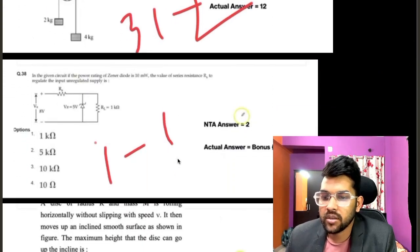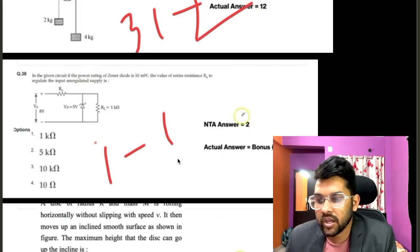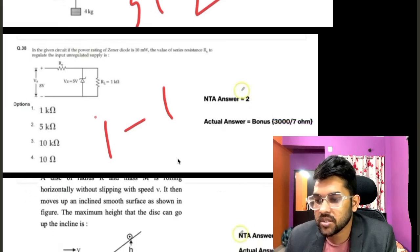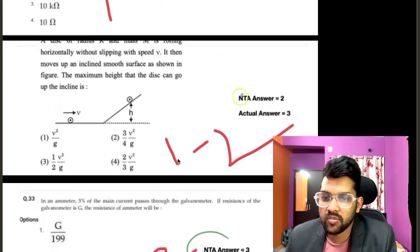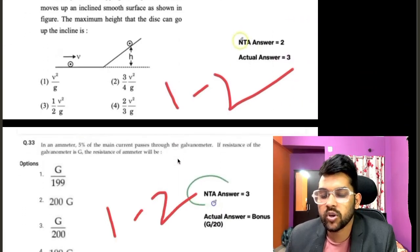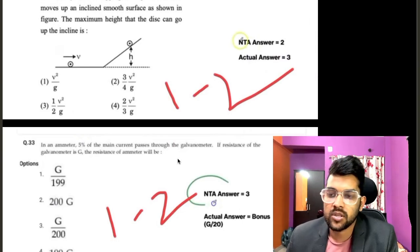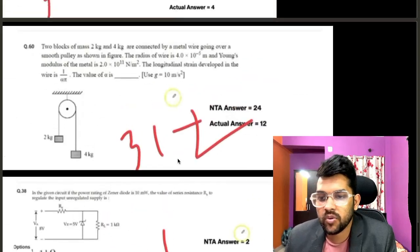Now if you come to 1st February first shift, then one bonus will be there, that is bonus will be treated in this question. Now if you talk about 1st February second shift, then two questions are having problem: one is bonus and one is error question.